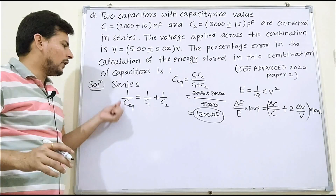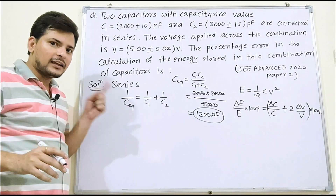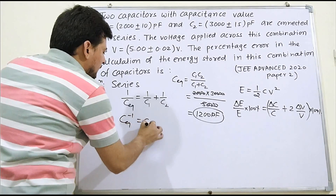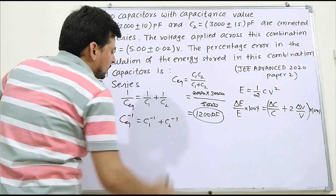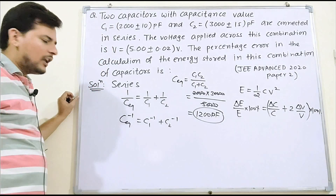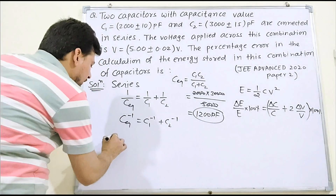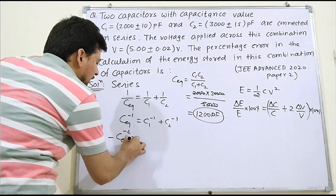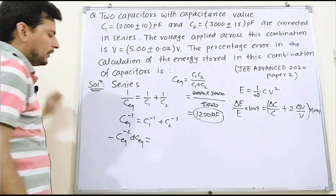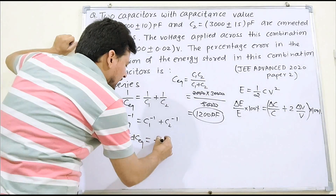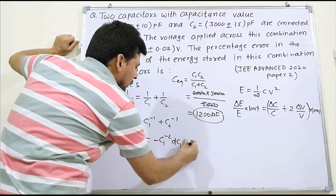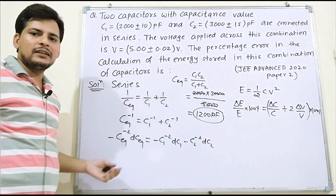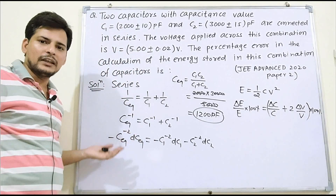Now, how do we find the error? Since 1/C_eq appears, I can write C_eq to the power minus 1 equals C1 to the power minus 1 plus C2 to the power minus 1 — just like the resistance formula. Now differentiate this: minus 1 comes forward, giving C_eq to the power minus 2 · dC_eq, equals minus C1 to the power minus 2 · dC1, minus C2 to the power minus 2 · dC2.